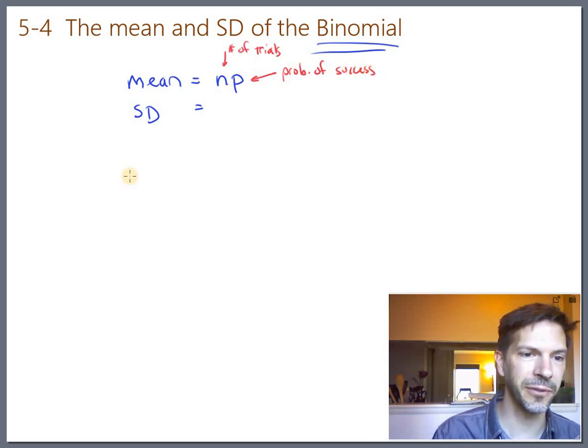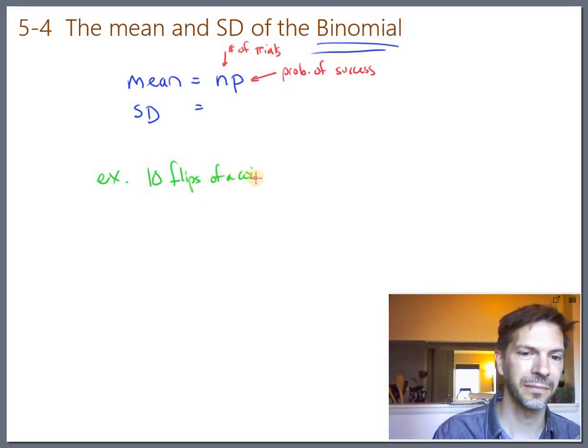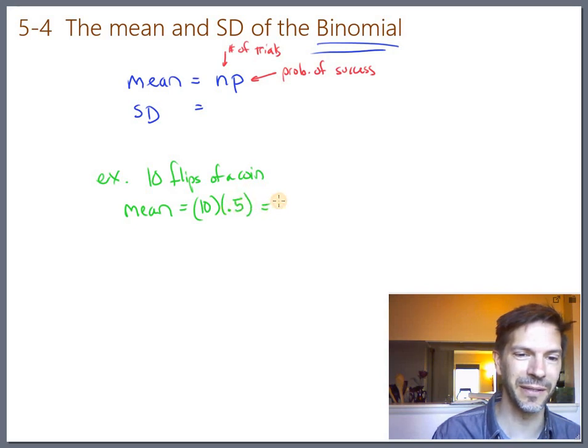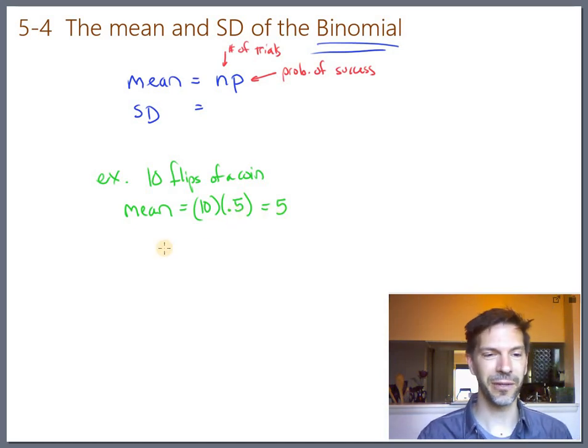For our particular example, where we're looking at 10 flips of a coin, the mean would have been n, the number of trials, which is 10, times the probability of success, which is 0.5. So we'd say the mean is 10 times 0.5, which is 5. No big shock there.